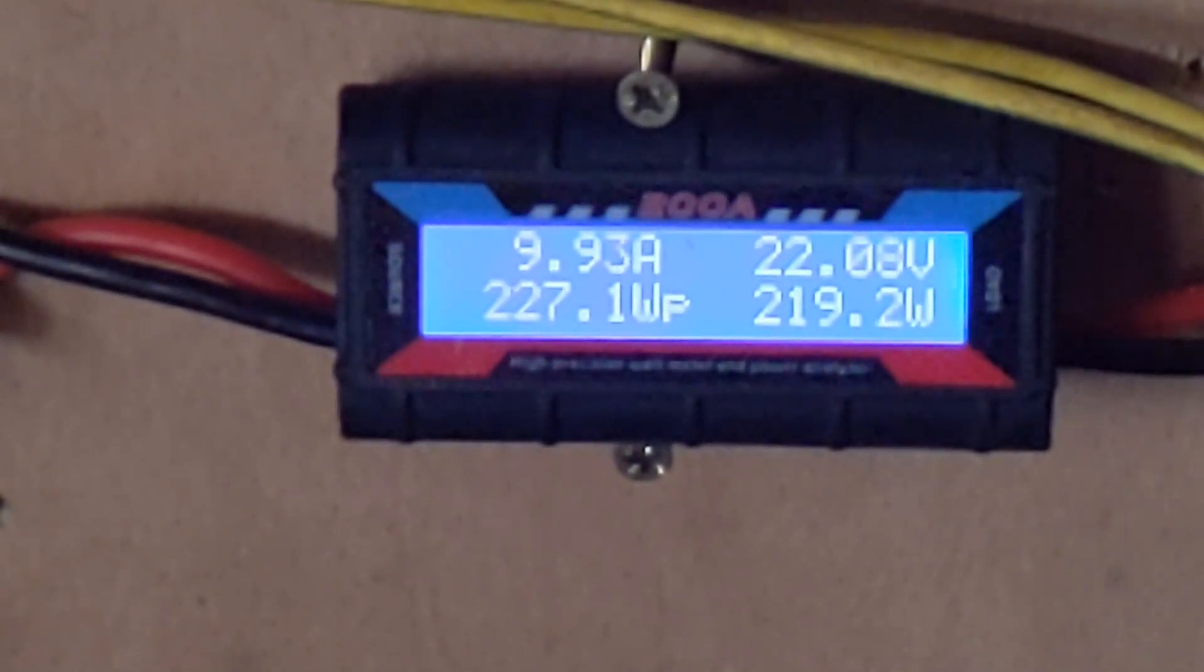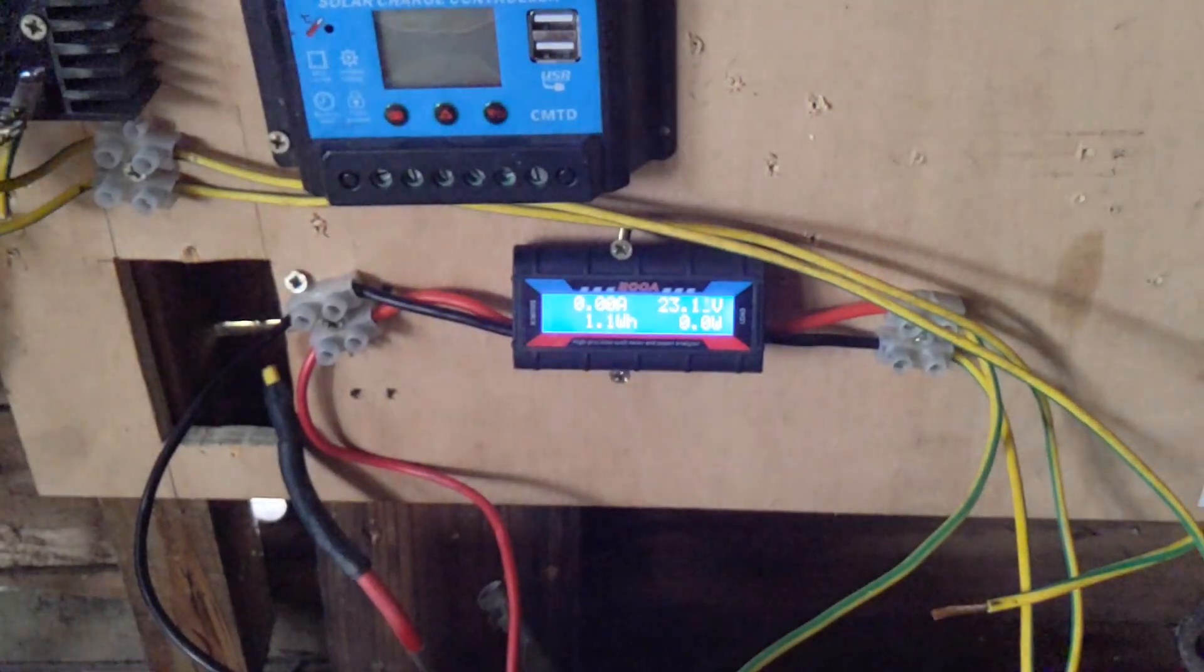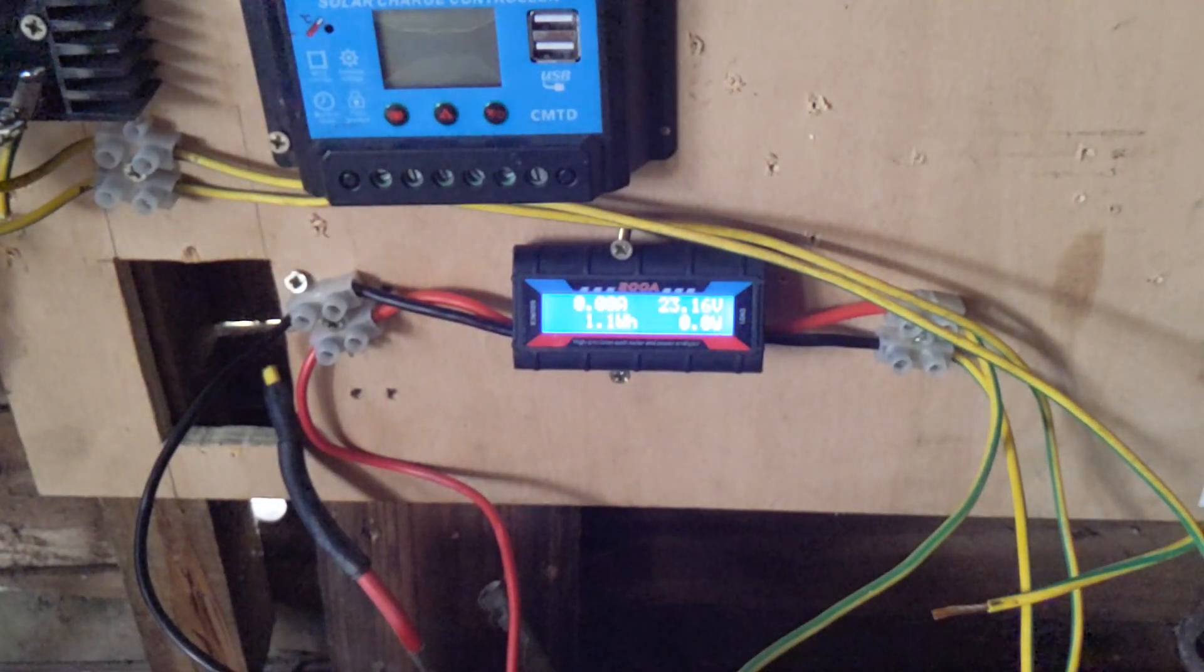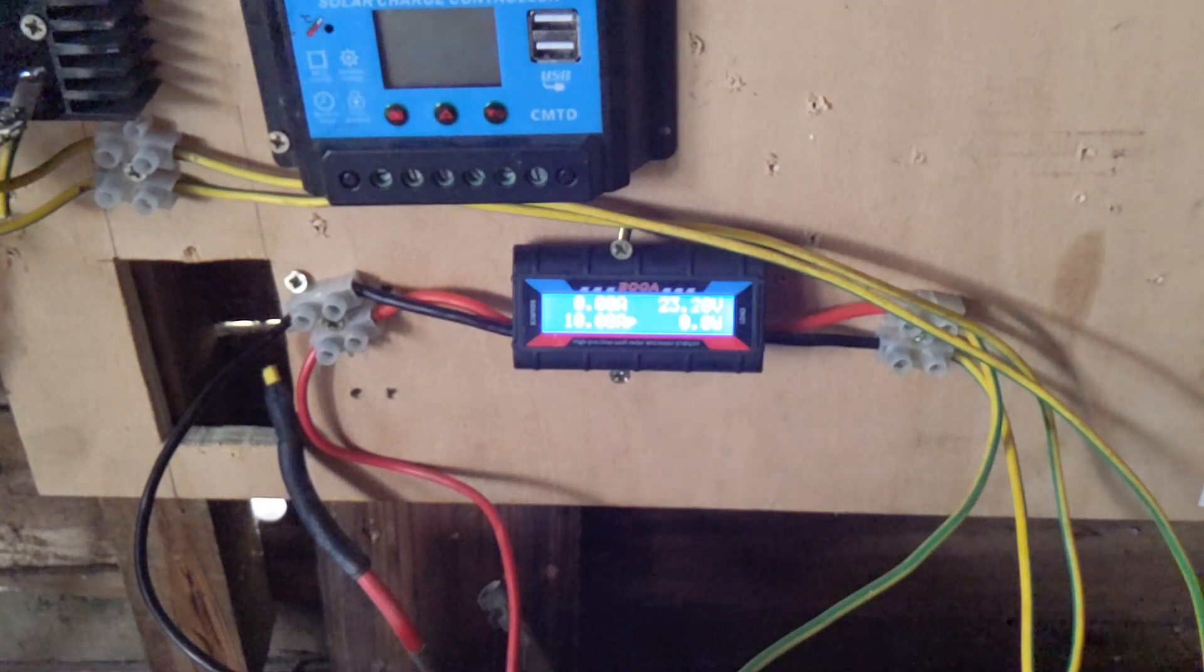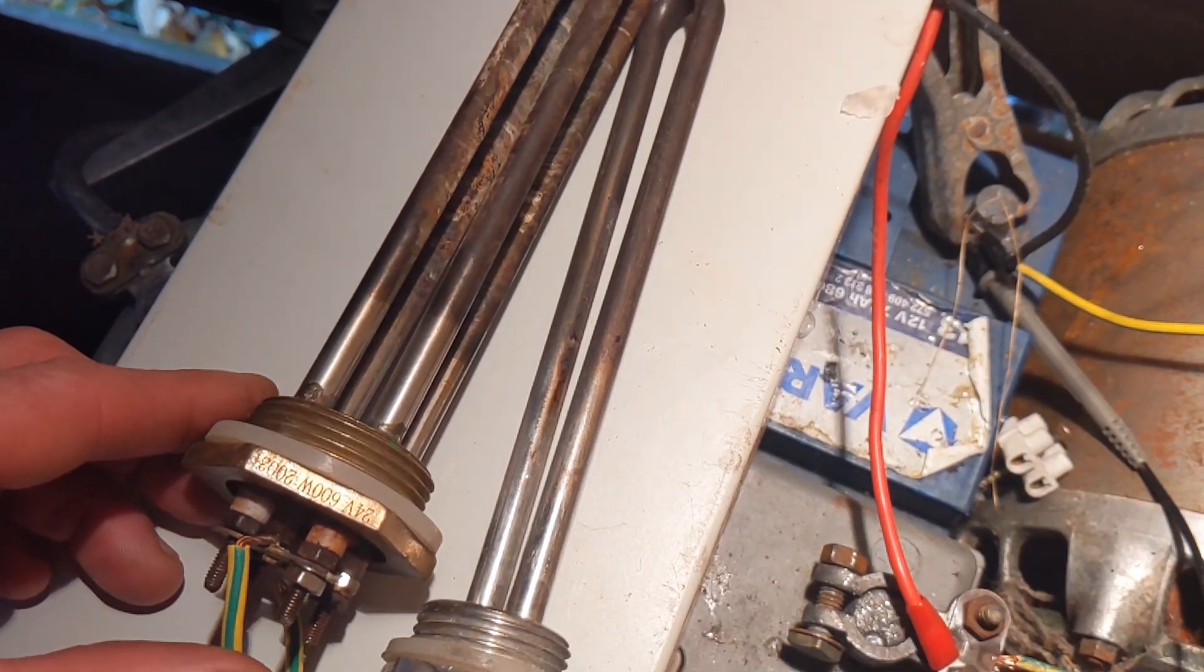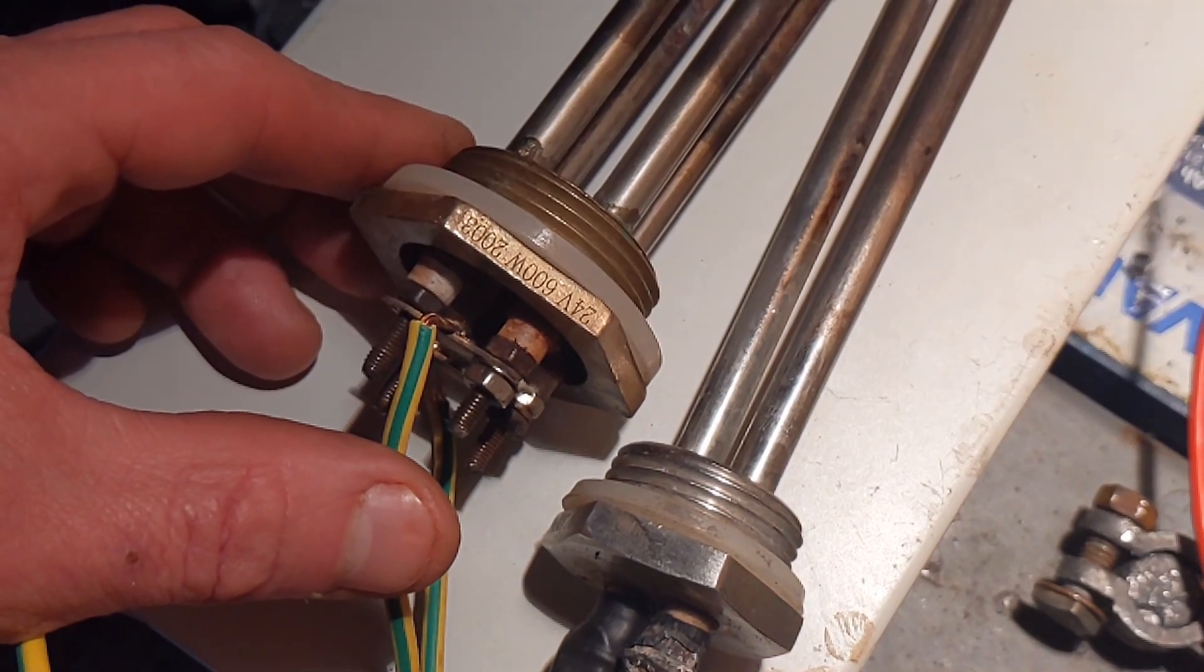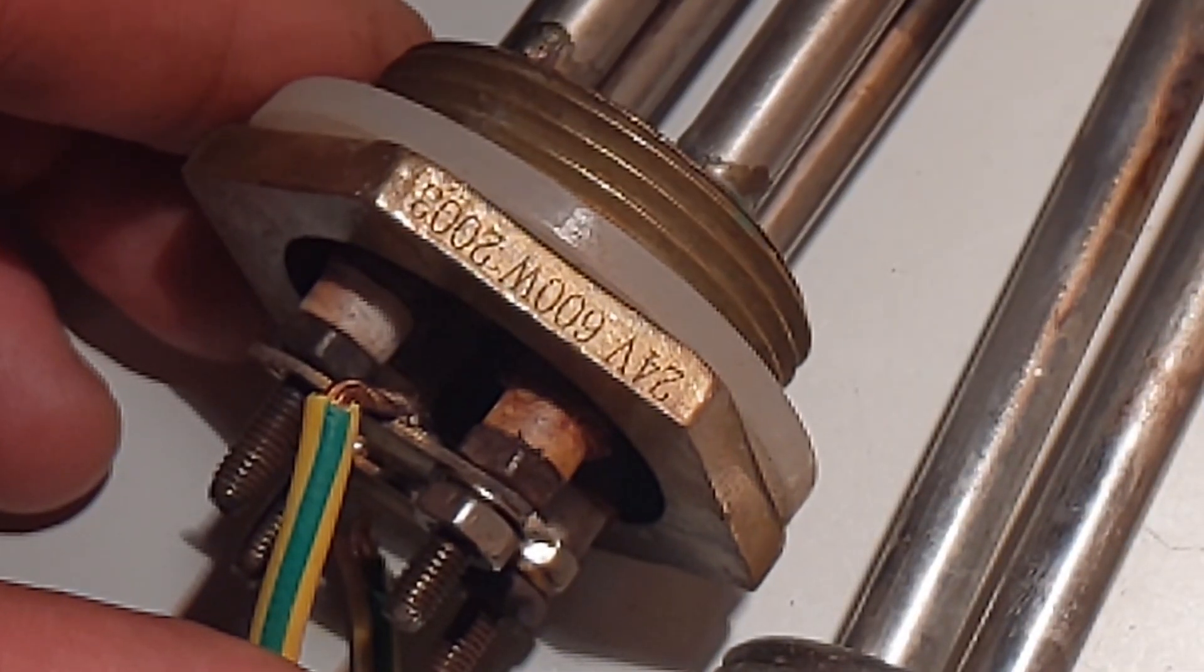I'm just going to turn it off now and connect the bigger dump load, which I will show you a size comparison of. This is the 24 volt 600 watt unit. I'm just going to connect that up and we'll see what happens.